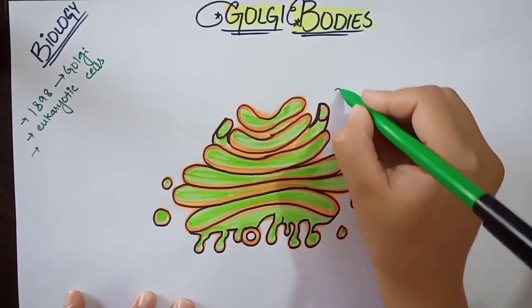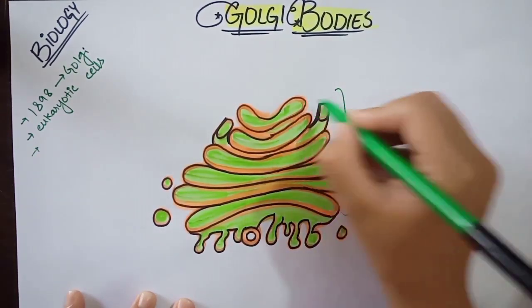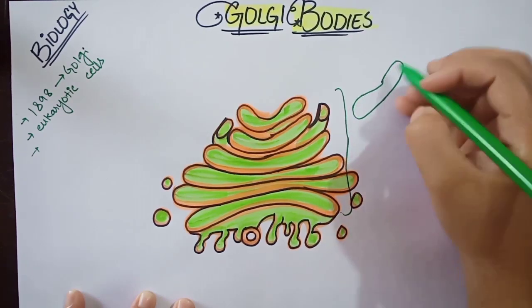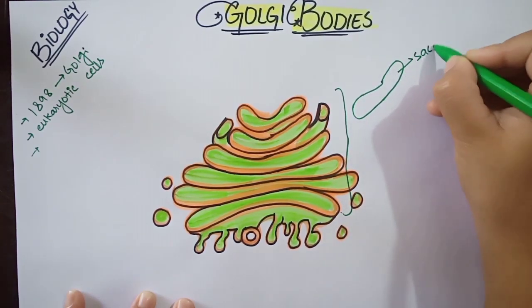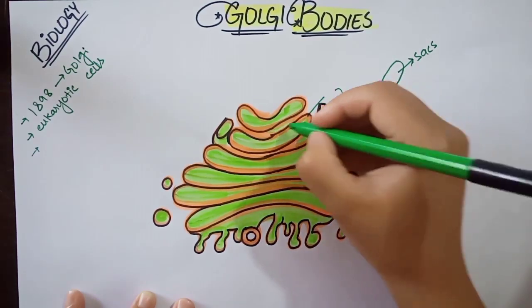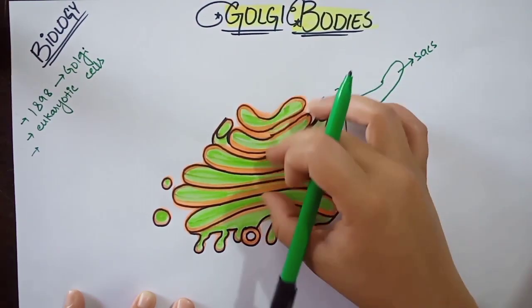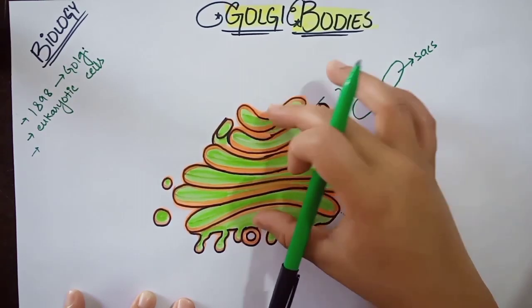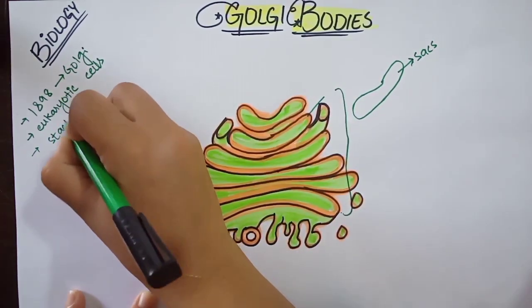Let's look at the structure of a Golgi body. These individual units are known as sacs. These are sacs, and these sacs are arranged in the form of a stack. They are forming a stack — Golgi bodies are stacks of sacs.